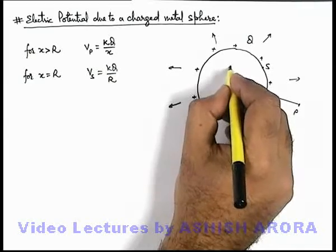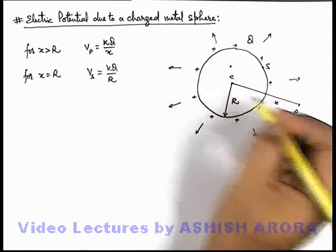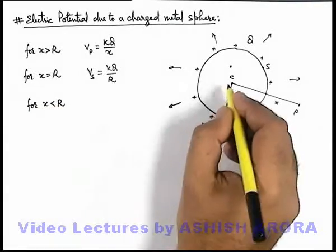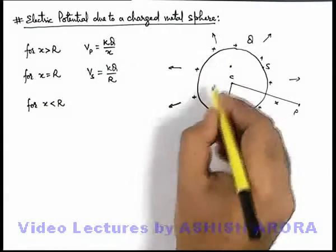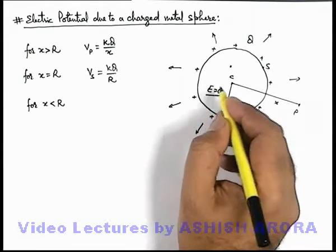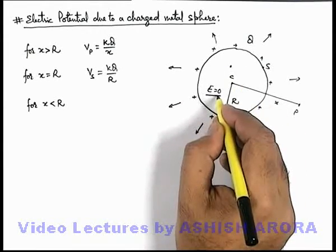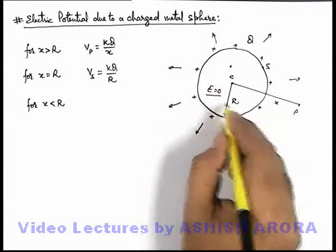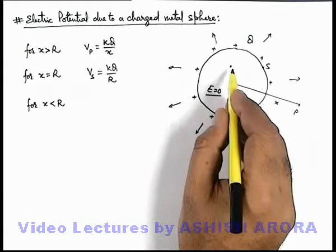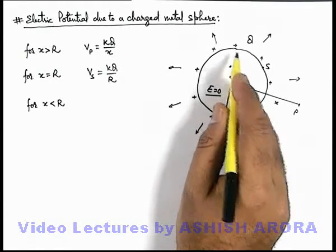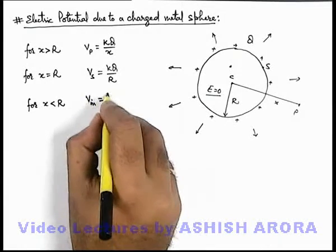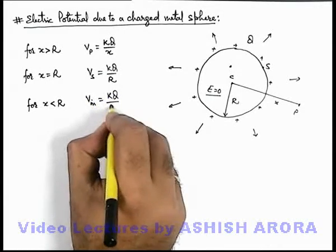And if we talk about an interior point, then for x less than r, we already discussed that in case of a metal body the inside electric field is zero. So at every point of a region if electric field is zero, then all the points are at the same potential. So the electric potential at an interior point will be the same as that of the surface point, and V inside can also be written as kq/r.